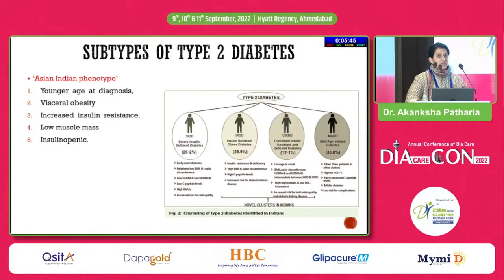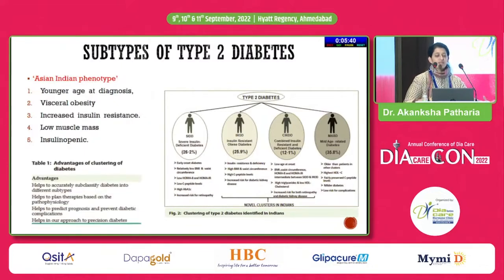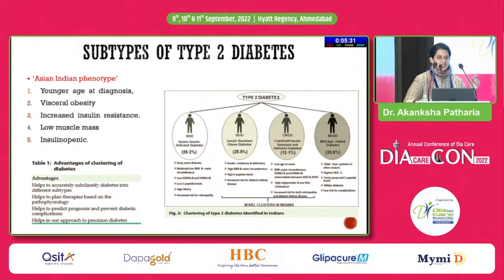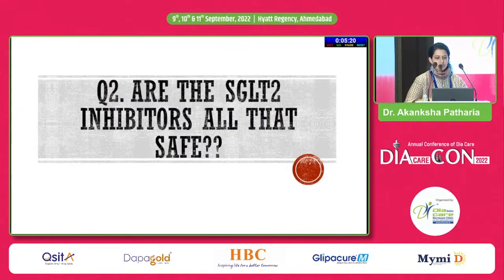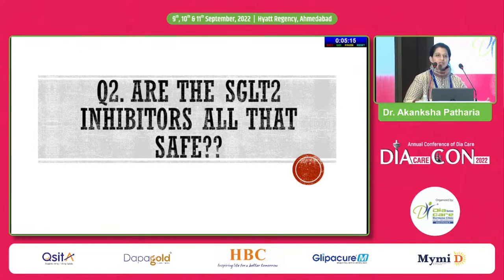If we create such clustering of type 2 diabetes, the advantage is we can accurately classify the patient and, based on pathophysiology, give the targeted drug to that patient. This is called precision diabetes, and it is very important. SGLT2 inhibitors are safe — no doubt about it — but when used in specific categories of patients, we must also look at the milder risks involved.